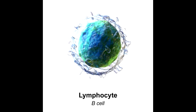B lymphocytes migrate in peripheral lymphoid tissue such as follicles of the lymph nodes, white pulp of the spleen, and unencapsulated lymphoid tissue. If they encounter an antigen, B lymphocytes differentiate into plasma cells that produce antibodies and they also form memory cells.